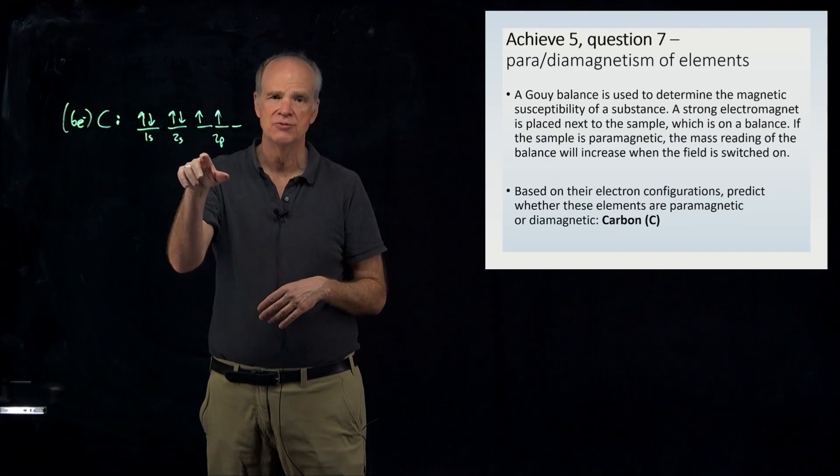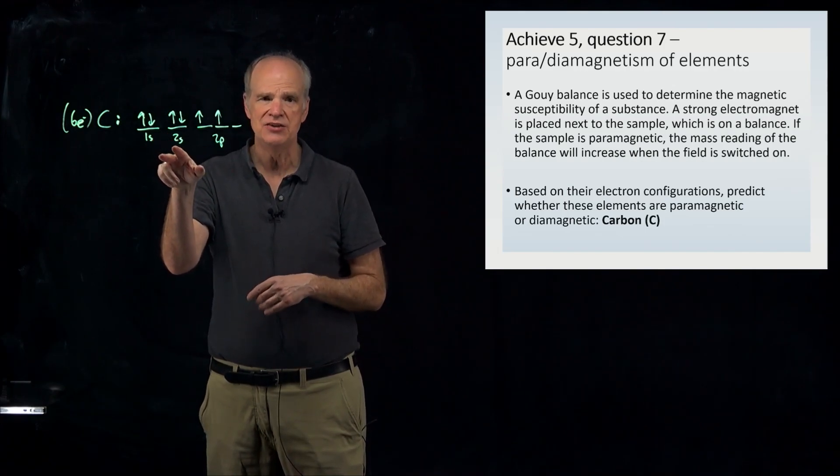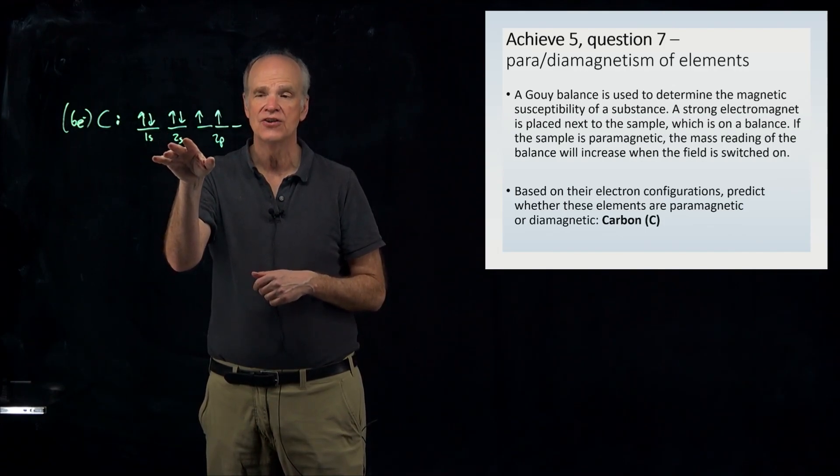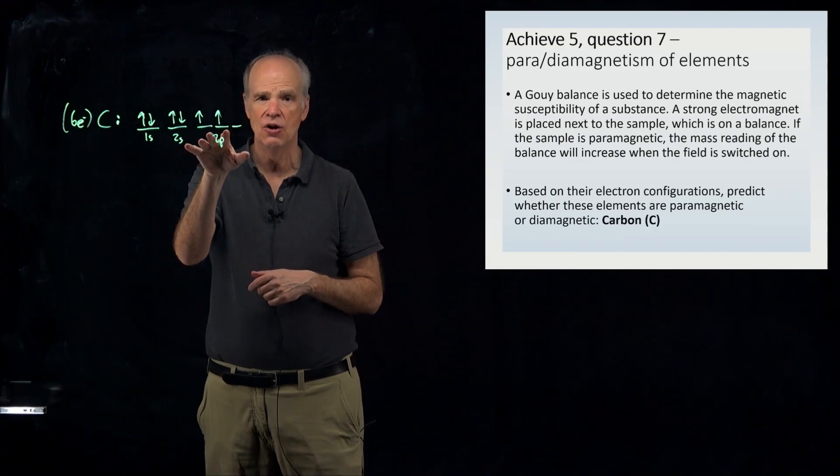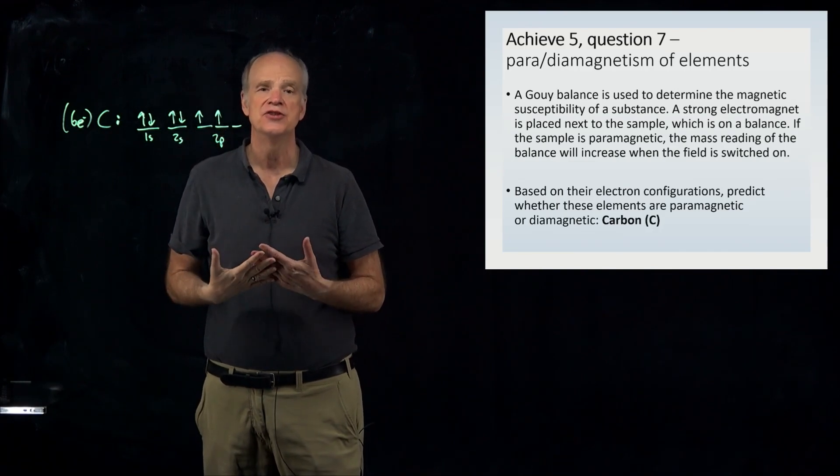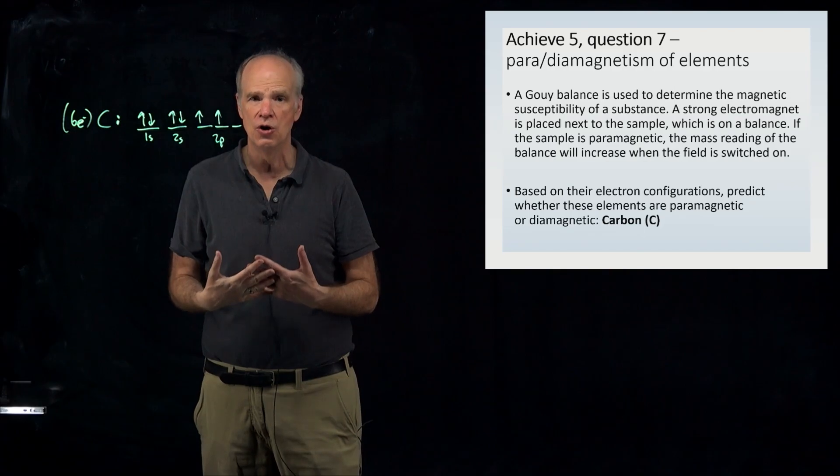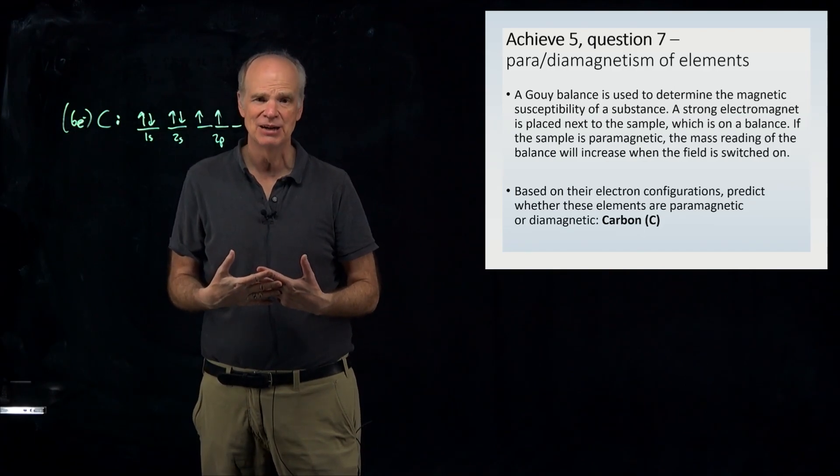So here, let's look at carbon's configuration. And you can see that not all of carbon's electrons are always found in pairs. If they were found in pairs always, then it would be a diamagnetic atom.